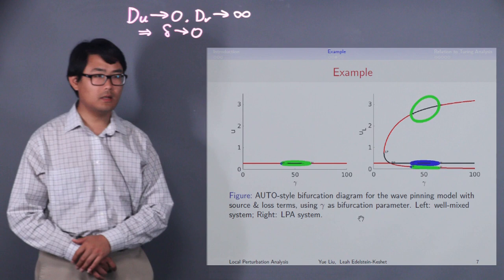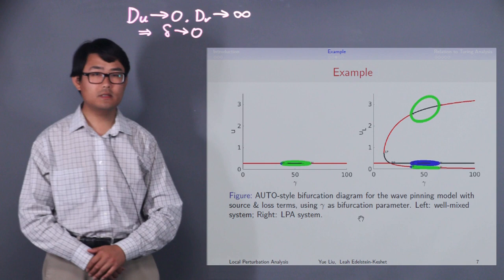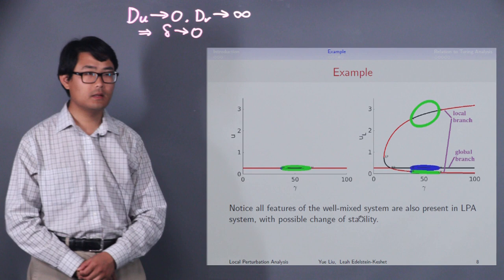Notice that everything in the well-mixed diagram here appears also in the LPA diagram. That is, this branch of equilibrium, the two hop bifurcations, and this limit cycle. However, their stability can change in LPA.